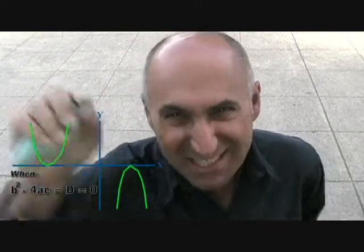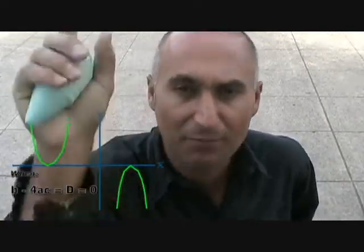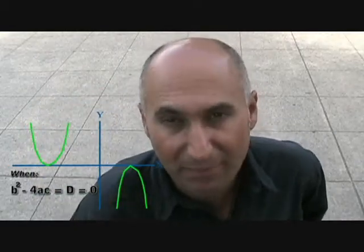We just did one where the discriminant was greater than zero, so we have two distinct real roots where the parabola crosses the x-axis in two places — two groups, two factors. Let's do one where the discriminant inside the square root symbol in the quadratic formula is equal to zero, which means the parabola just touches the x-axis, just hits it and bounces back up, or hits it and bounces back down.